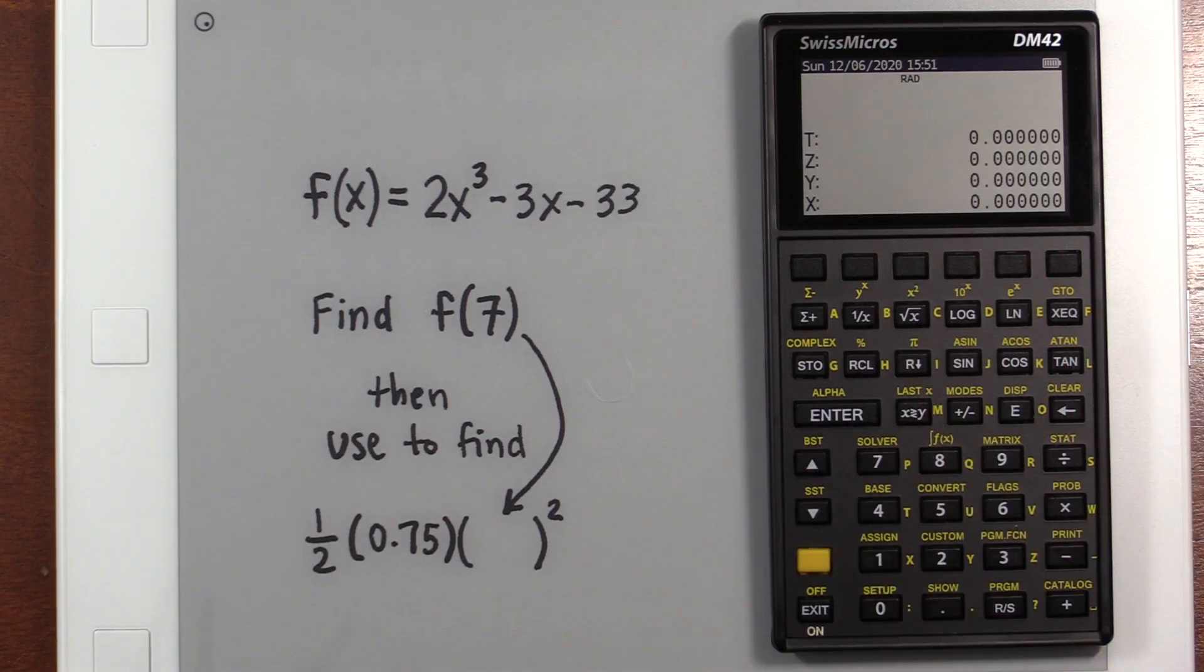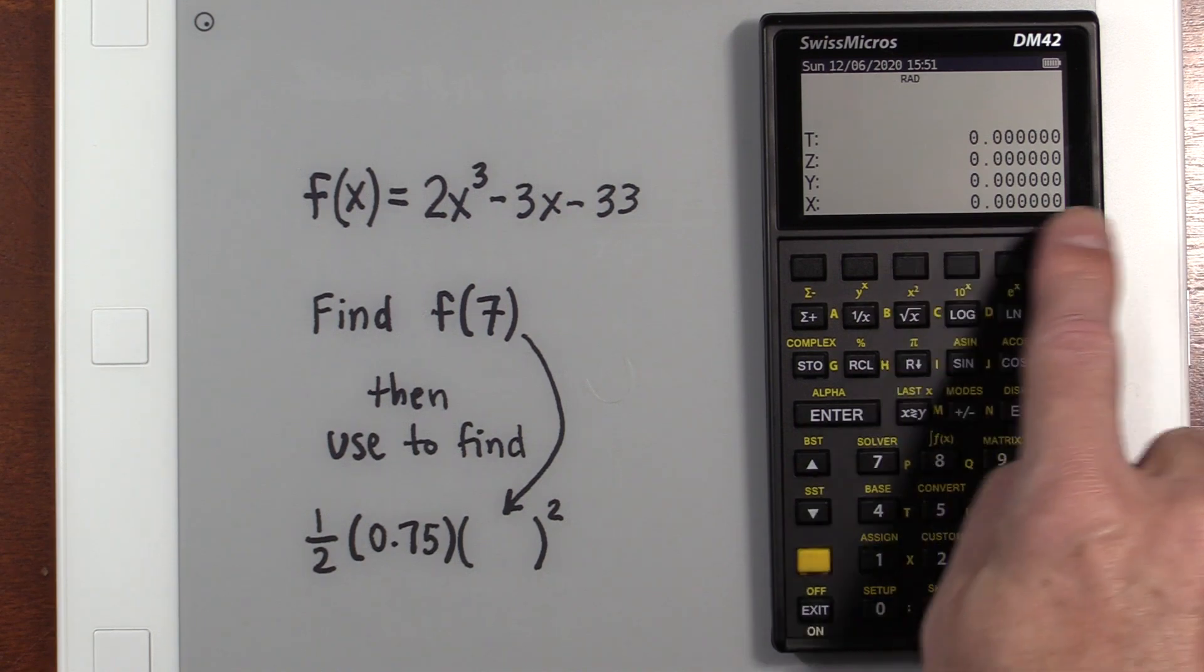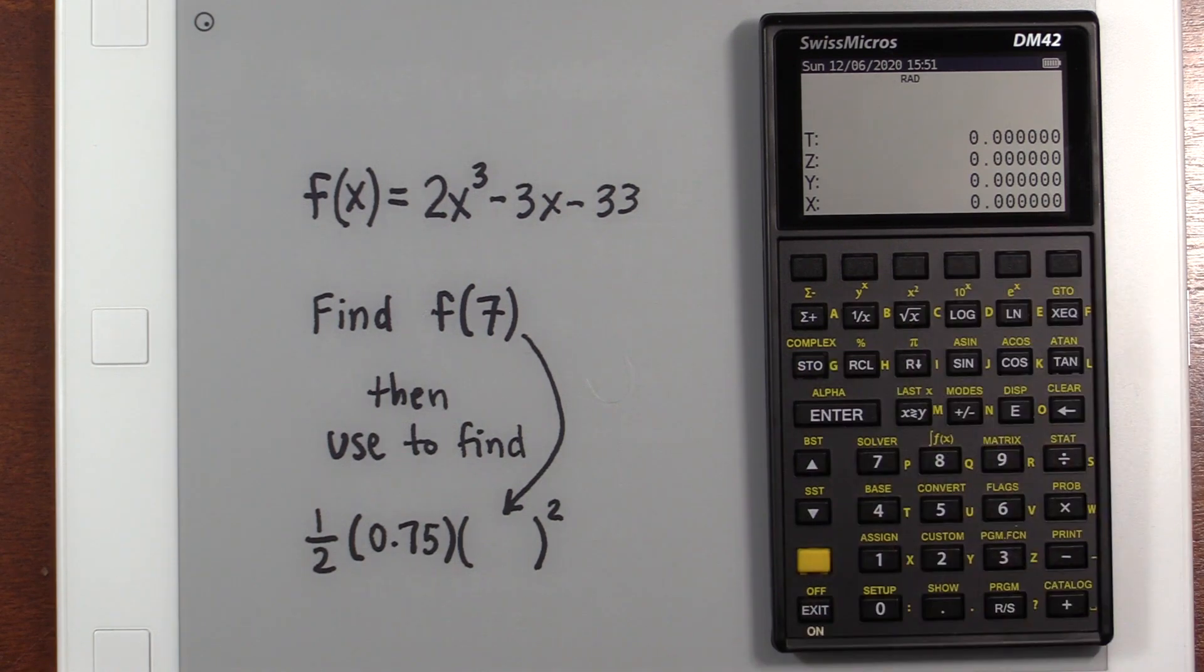Alright, we're going to look at the DM42. I just got this based on lots of good things I'd heard, and I love the form factor. It's real small. I really like the screen a lot, and I like the simplicity of it. The HP48GX blows it away in terms of power, but the downside is that comes with complexity.